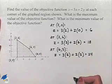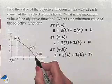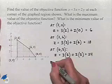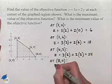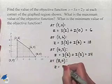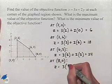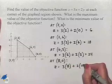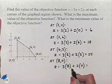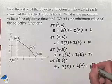And finally, our last corner has coordinates 8 comma 0. Our z value will be 3 times the x value of 8 plus 2 times the y value of 0. That's 24 plus 0 which is equal to 24.